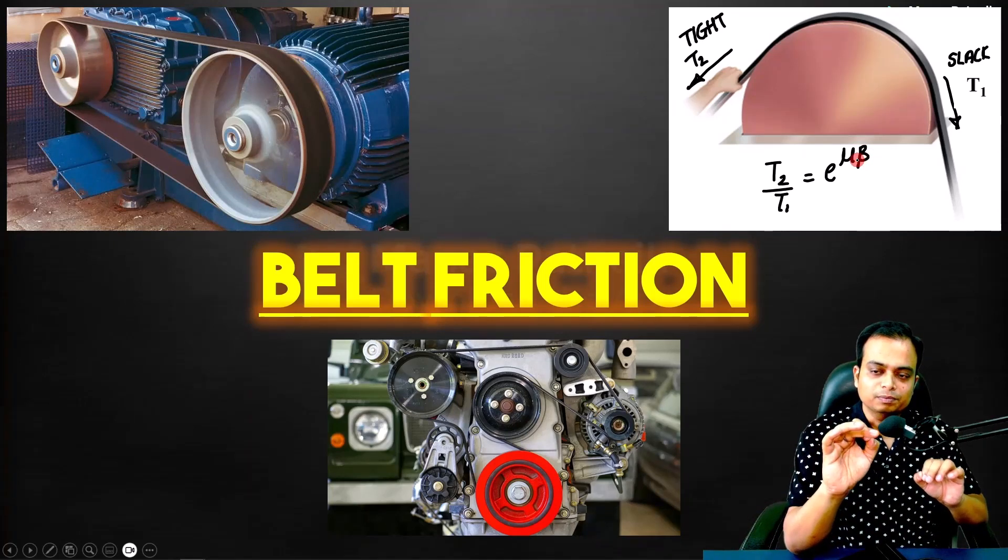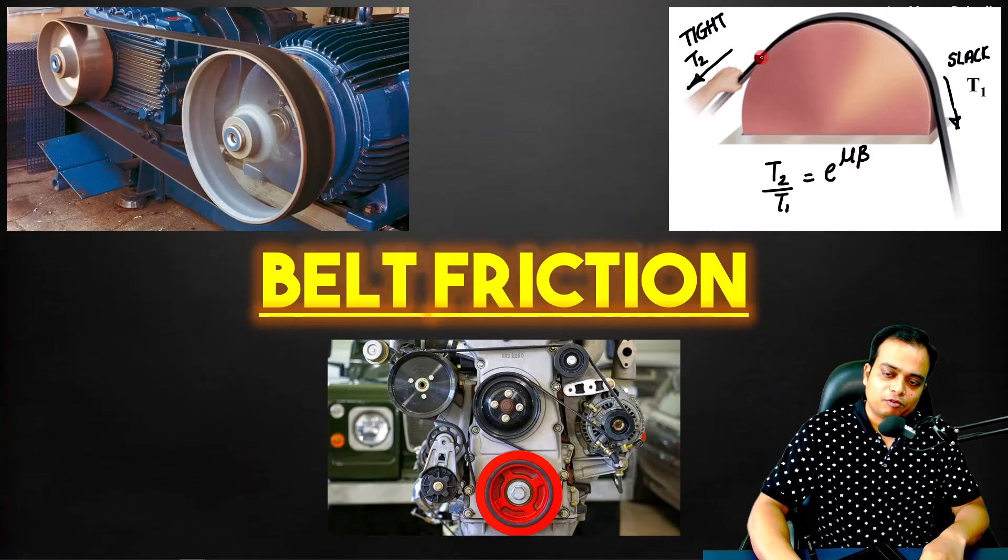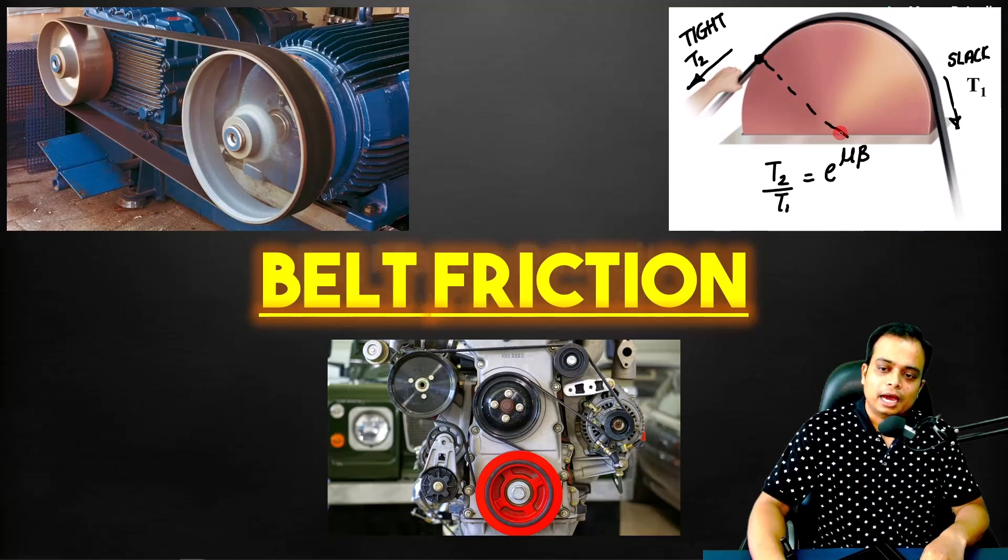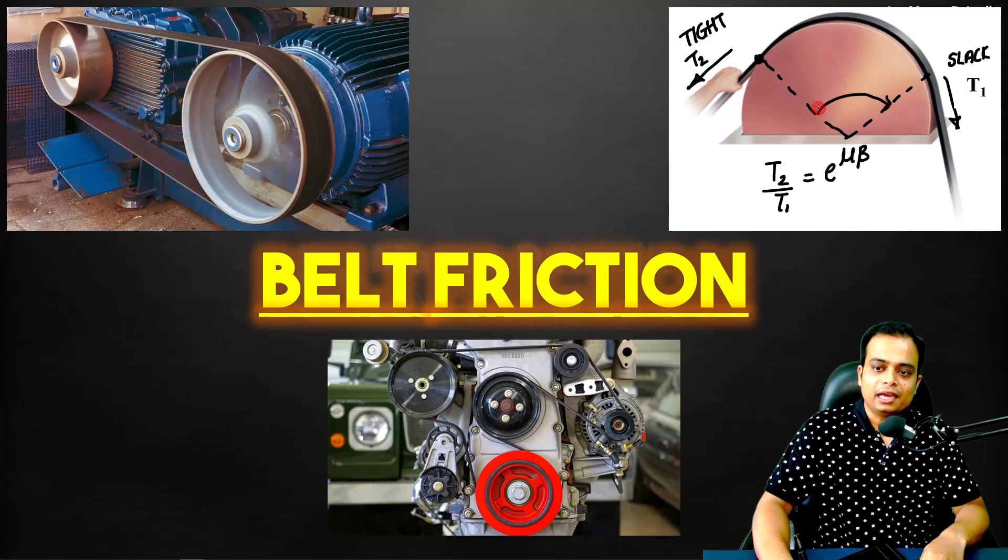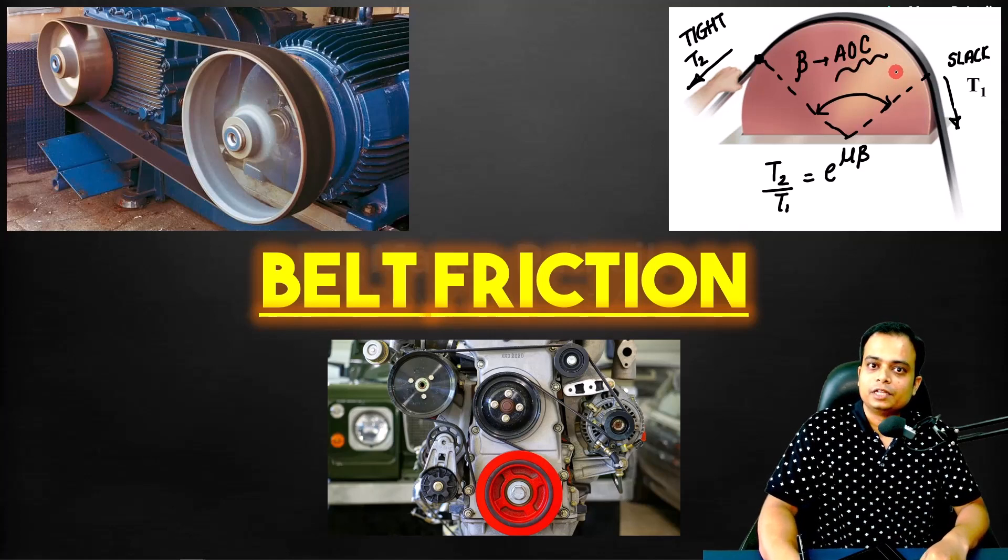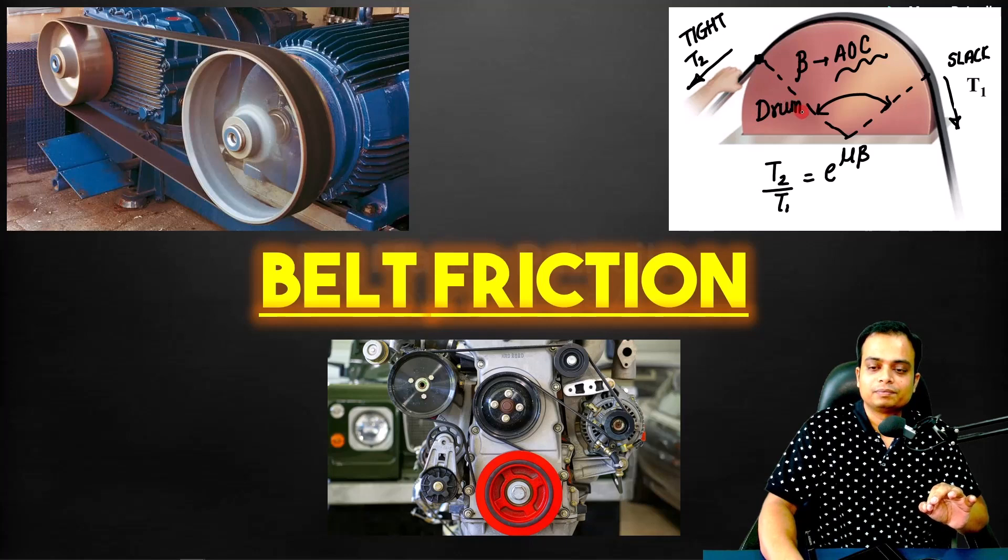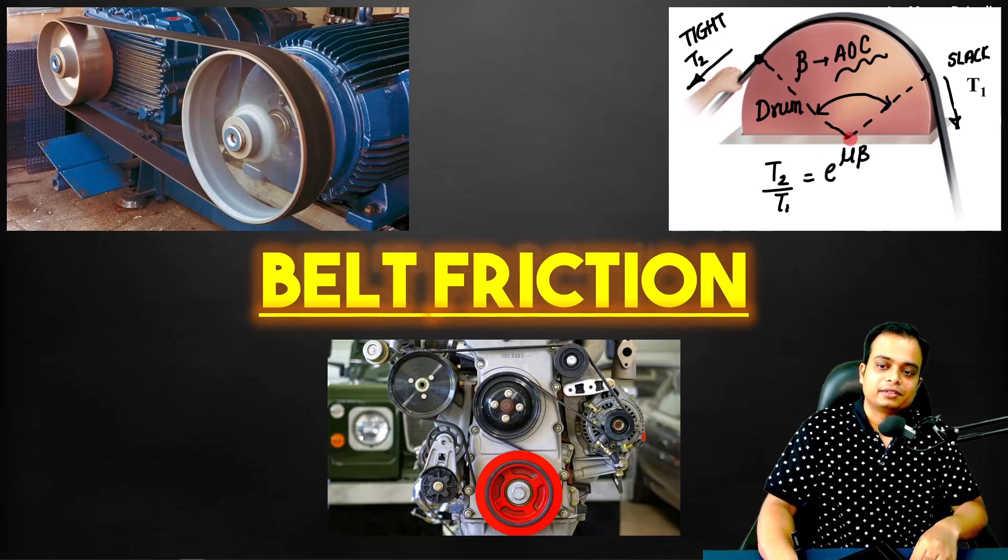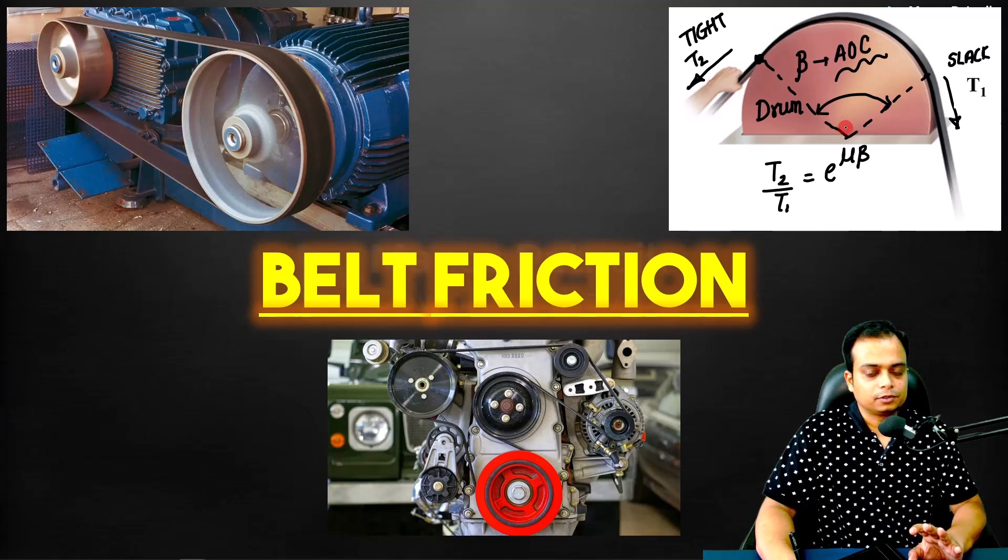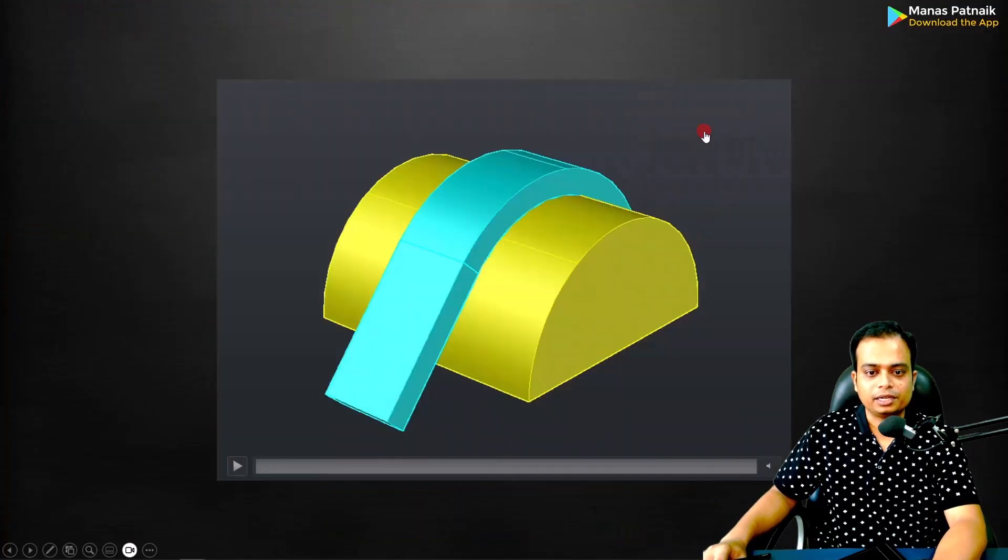Secondly, if you watch, the point of contact starts over here and ends somewhere here. This angle over here is what is referred to as beta, and we call it angle of contact. The contact that the belt makes with this drum—the angle it makes at this point is the angle of contact. So shall we begin?